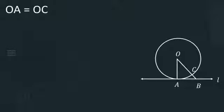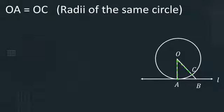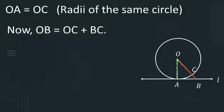OA is equal to OC. Why? Radii of the same circle. OB is equal to OC plus BC.